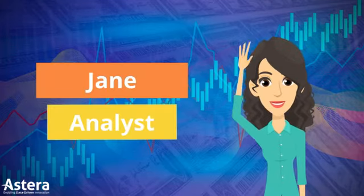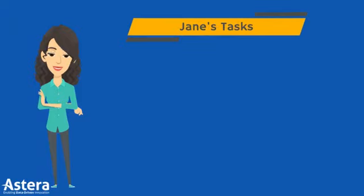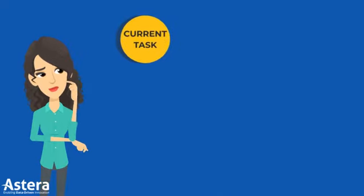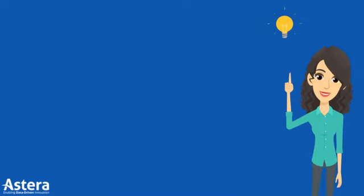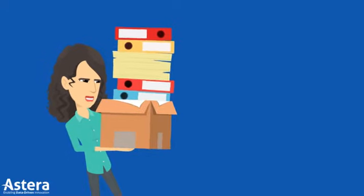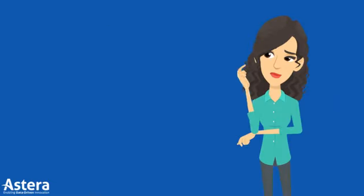This is Jane — she works as an analyst at a bank. Jane's tasks as an analyst primarily include analyzing various KPIs and making trend reports. Currently she is working on a task where she must identify and analyze complaint tickets filed by the bank's customers. Her main objective is to identify the product getting the highest number of complaints and the complaint status. She has a huge amount of data from the customer complaint department, and the report is due next week. What options does Jane have?